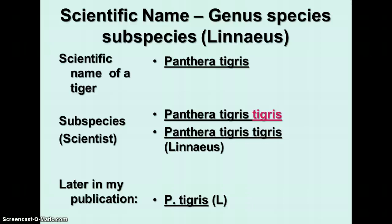The correct way to publish the name of the Bengal tiger: if you are doing a publication about a Bengal tiger, it's fine to list it the whole way the first time, and then afterwards you can abbreviate it as shown here on the screen, to save space. Because if you've already talked about that species, it should be known that that's the species you're continuing to talk about in the same publication.